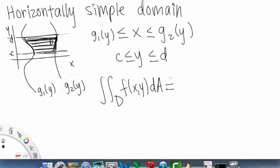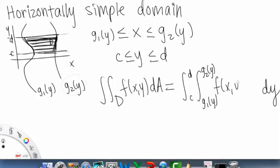And then this time, it's going to look like, so we want the constants on the outside, right? So that'll be C to D, and we have DY on the outside. And then we write in the other, like, more complicated bounds, G1 of Y, G2 of Y, and then F of X, Y, DX.